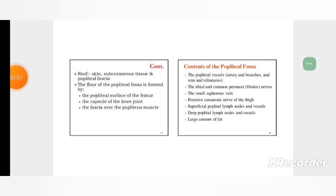Roof: skin, subcutaneous tissue and popliteal fascia. The floor of the popliteal fossa is formed by the popliteal surface of the femur, capsule of the knee joint, and the fascia over the popliteus muscles.